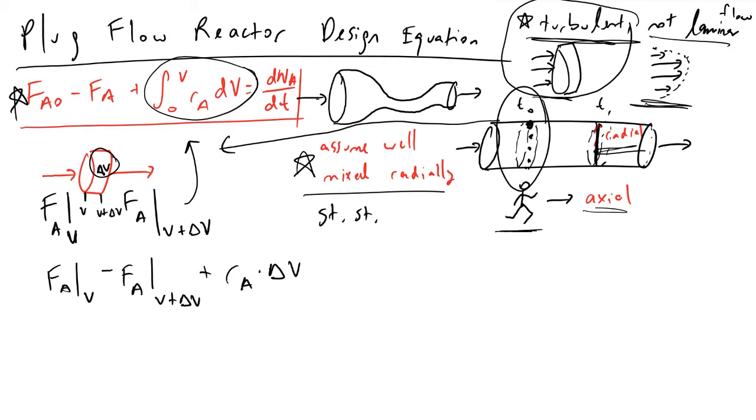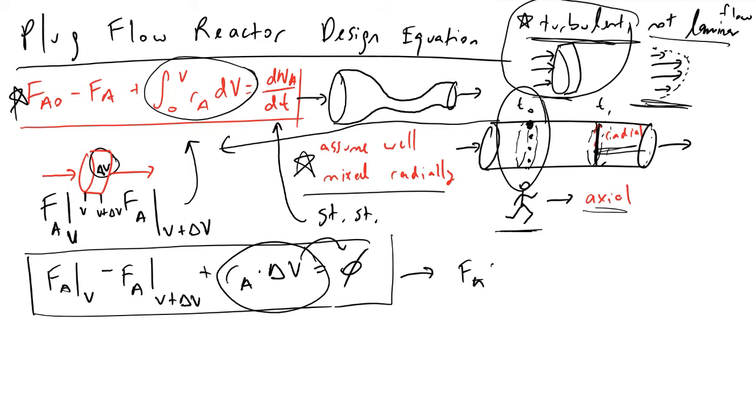And then if we make a steady state assumption, which is very common with our plug flow reactors, what this tells about this term is that we can now let it be equal to zero. And so we've now modified or plugged and chugged our general mole balance equation to arrive at this. And so what we're going to do next is just move this term to the other side of the equation. What we'll arrive at is FA evaluated at V minus FA evaluated at V plus delta V is equal to minus RA times delta V.